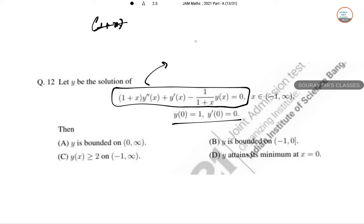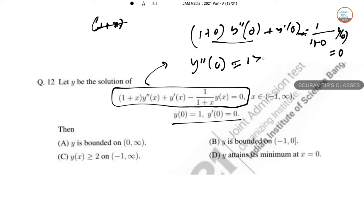So from this we can get 1 plus 0 Y double dash 0 plus Y dash 0 equals minus 1 by 1 plus 0 Y(0). This is equal to 0. So Y double dash 0 only here. And this is gone equal to 1 greater than 0.